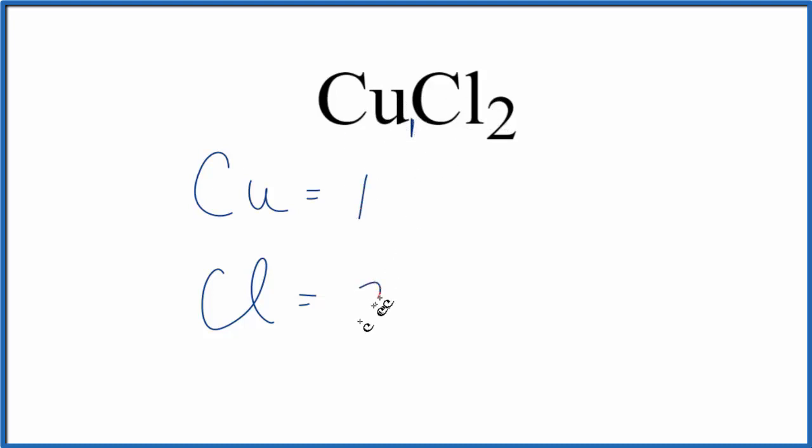Chlorine, we have two. And if you wanted to know the total number of atoms in CuCl2, copper 2 chloride, you'd add these up. Two plus one, three total atoms in CuCl2.